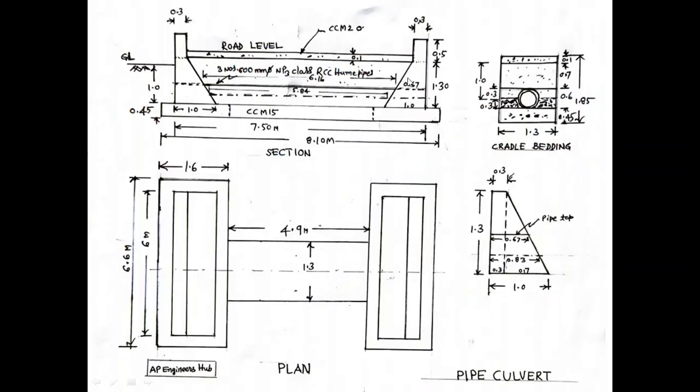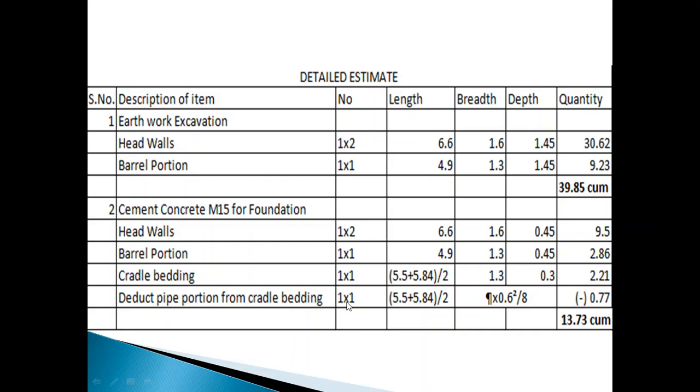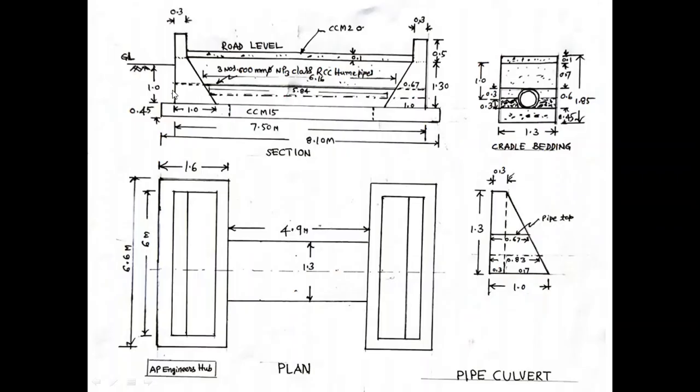These are the headwalls. These are headwall measurements: 1.65, 6.6. Depth of cutting is 1 meter plus 0.45 foundation, total 1.45.